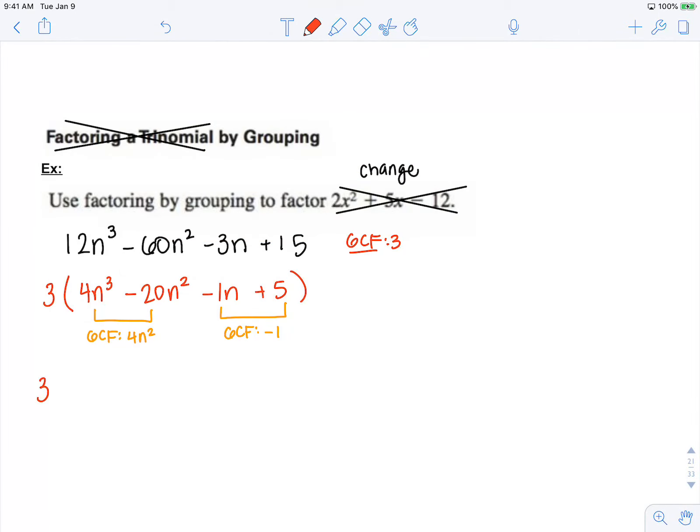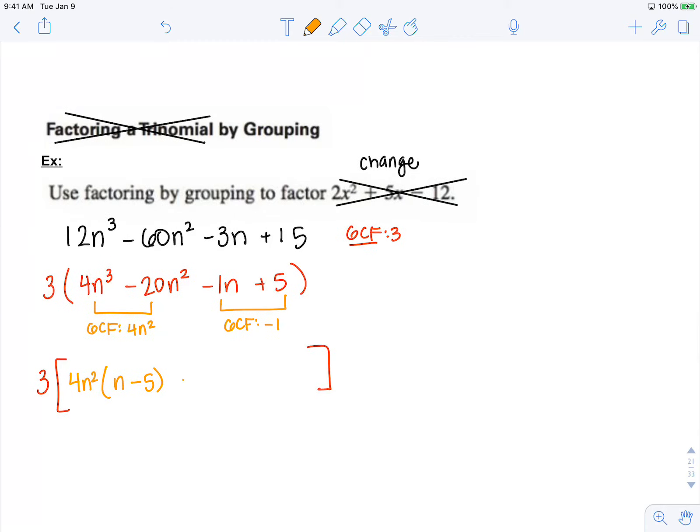Now, notice this 3 GCF is going to stay on the outside. And now I have 4n squared. When I factor that out, that leaves n minus 5. And if I factor out a negative 1 here, that also leaves n minus 5.